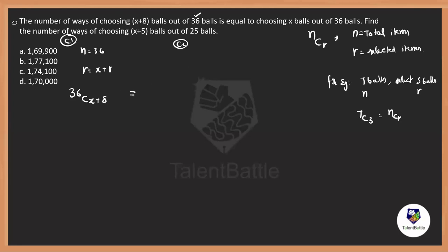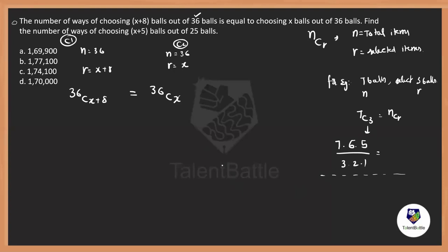For example, if you have 7 balls and select 3, that's 7C3 = nCr. Similarly here: n = 36, r = x+8 gives 36C(x+8); the second case is 36Cx. The main property needed: nCr = nC(n−r), so 4C3 = 4C1. The property is: if nCp = nCq, then p + q = n. This is the key property. Since the base n is the same in both cases, (x+8) + x = 36, giving 2x + 8 = 36, so 2x = 28, and x = 14.